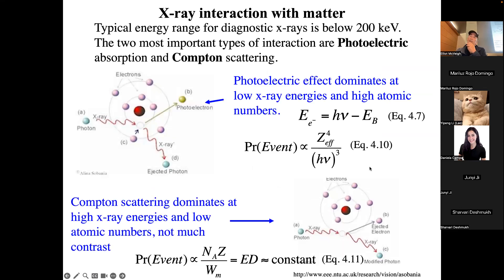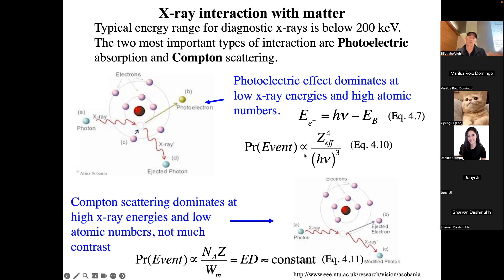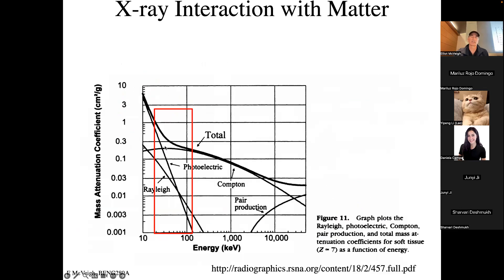Here's the formula for the probability of those two events as a function of photon energy and atomic number Z. The probability of the photoelectric effect increases with larger atoms but drops off as the photon energy cubed. The Compton scattering cross-section scales with atomic size but is not strongly dependent on energy.